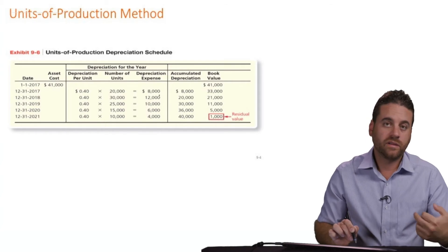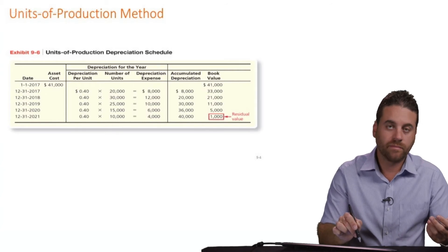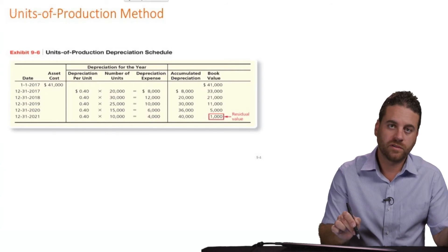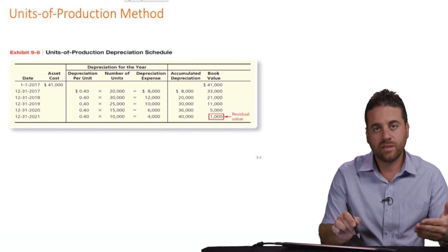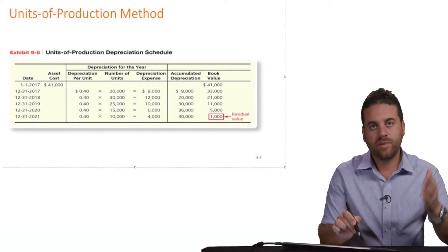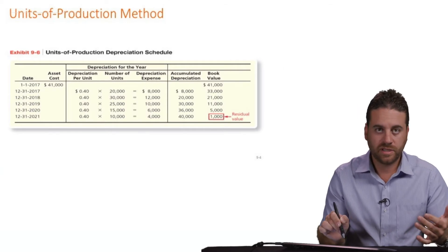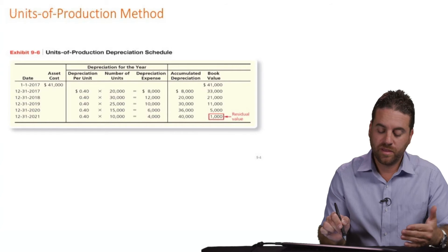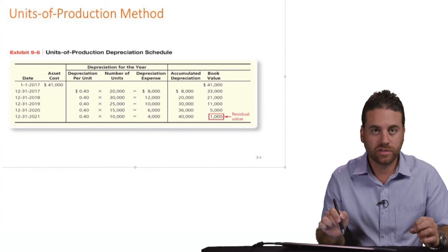Now, recording the journal entry is exactly the same. Either we use the units of production method or straight-line method. It's the same. It's debit to depreciation expense and credit to accumulated depreciation. The only difference between the methods is how to calculate the amount, not how to record the journal entry.